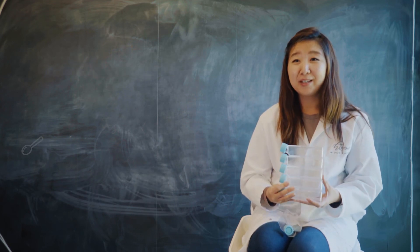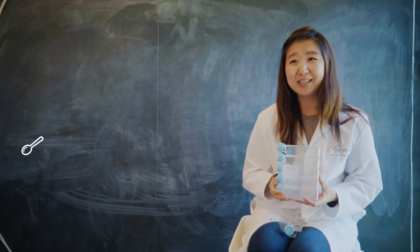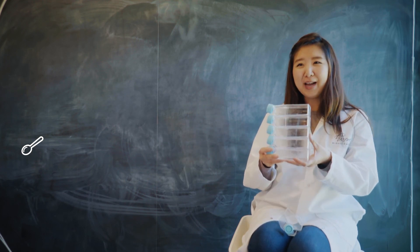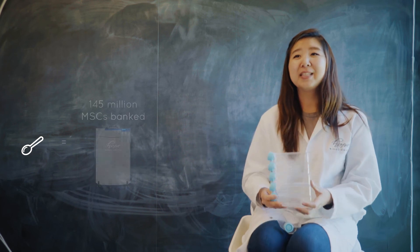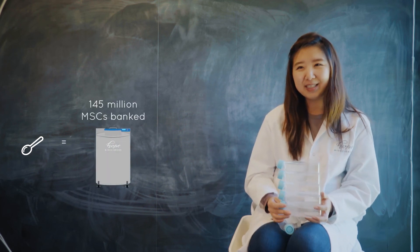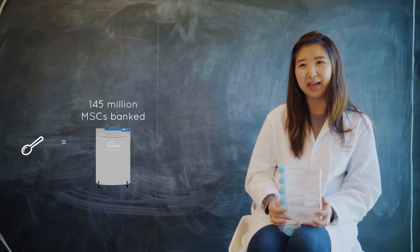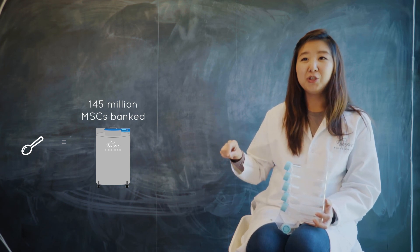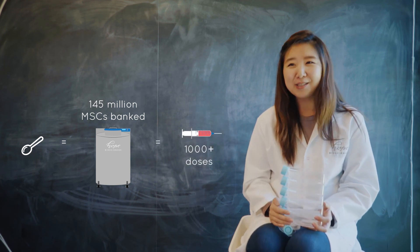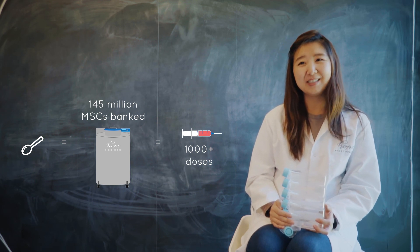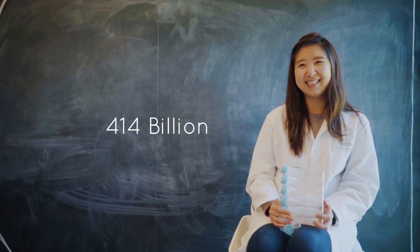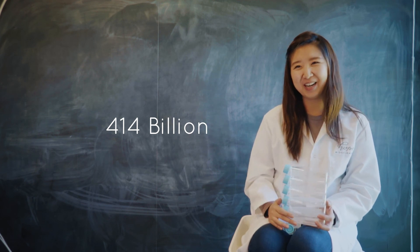Remember how we started with just 100,000 mesenchymal stem cells from that one tablespoon of fat? From that small amount, we're able to bank approximately 145 million stem cells in your master cell bank. Those very cells can be used to generate over a thousand treatments over the course of one's lifetime. That's a whopping 414 billion cells from a single fat extraction.